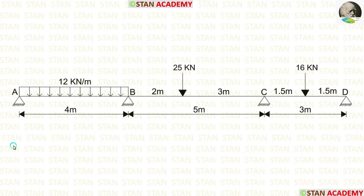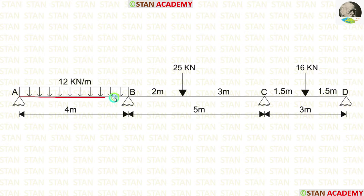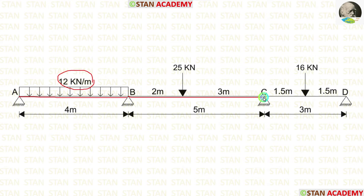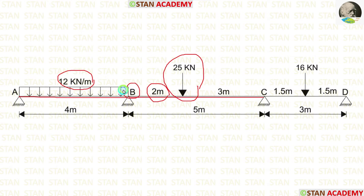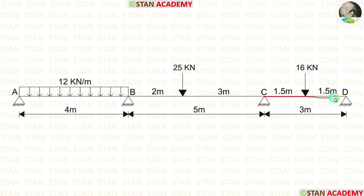In this beam, there are three spans: span AB, span BC, and span CD. In span AB, there is a UDL acting for the full span. In span BC, there is a point load of 25 kN acting at 2 m from point B. In span CD, there is a point load of 16 kN acting at the center.